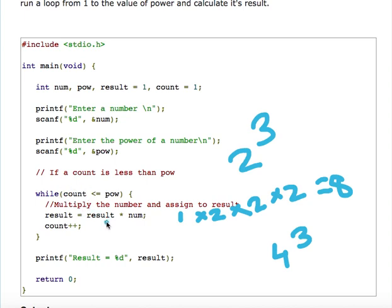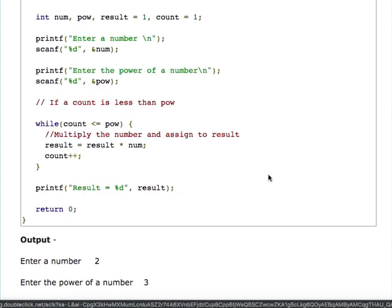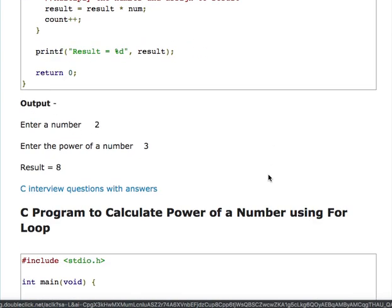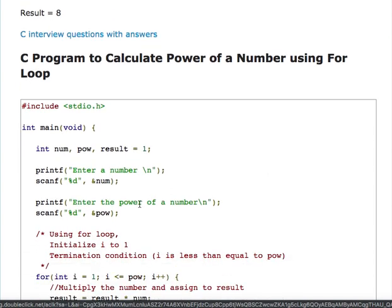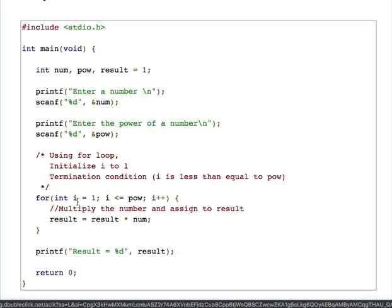Similarly, let's check the example of for loop. Let's see how we can calculate power of a number using for loop. The approach is same, here also we have taken two input variables num and power from a user.